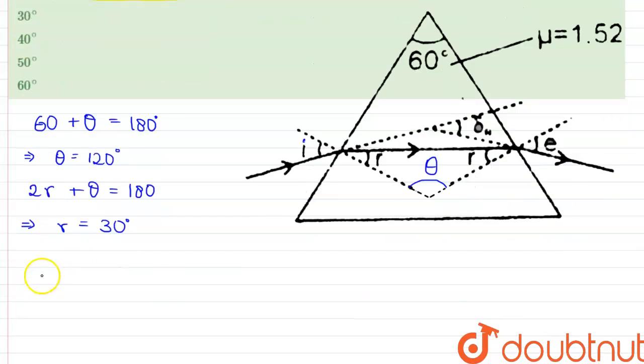we can write that 1 into sine i, where 1 is the refractive index of air and sine i where i is the angle of incidence, is equals to 1.52. As you can see in the question, that 1.52 is the refractive index for red light, multiplied by sine 30 degrees, as you can see that angle r is 30 degrees.